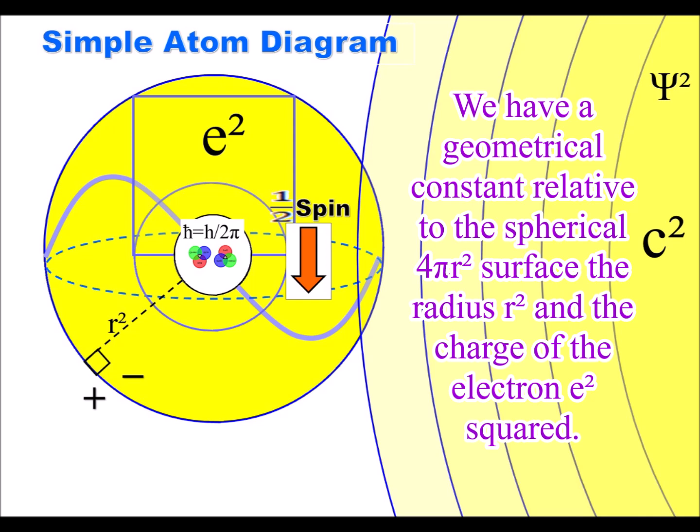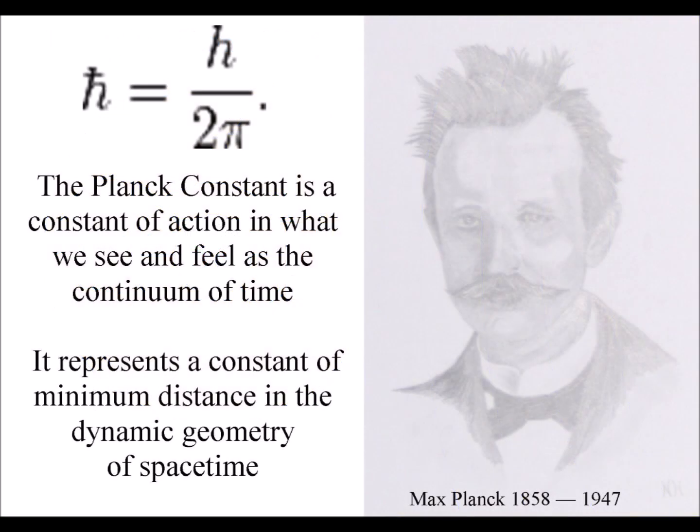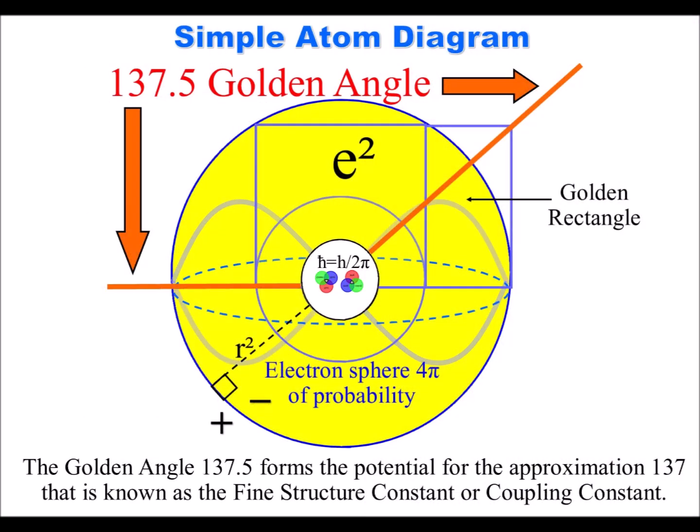This forms a minimum amount of energy forming a constant of action in space and time that we see mathematically as the Planck constant linked to 2pi representing the circumference of the sphere.